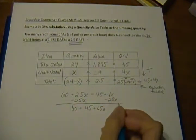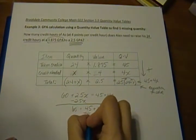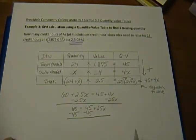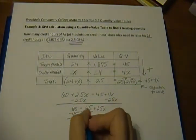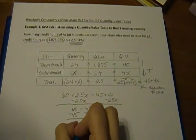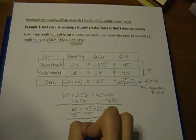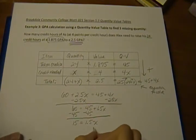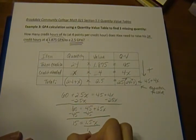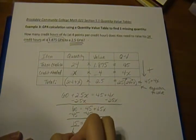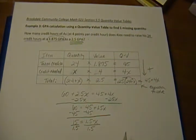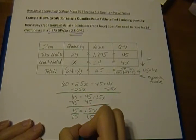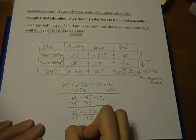Now we're going to subtract 45 from both sides to isolate our variable. We want to get X all by itself. So the first step is to get rid of the 45, so we end up with 15 equals 1.5X. And the second part of isolating our variable, we divide both sides by 1.5 so we can get what our X is equal to. So now we have our X equals 10.